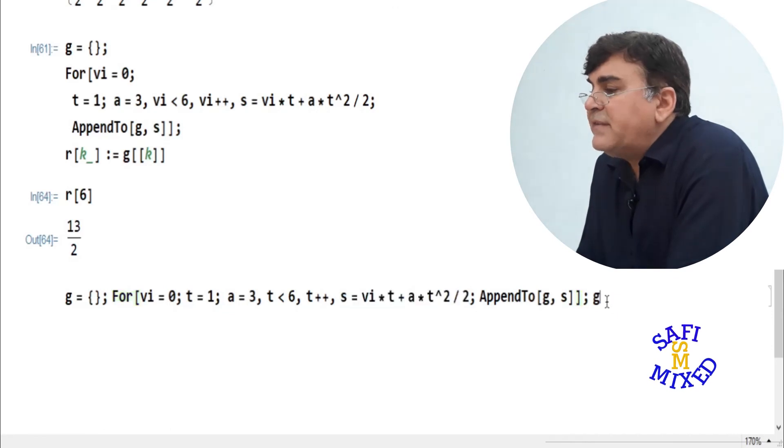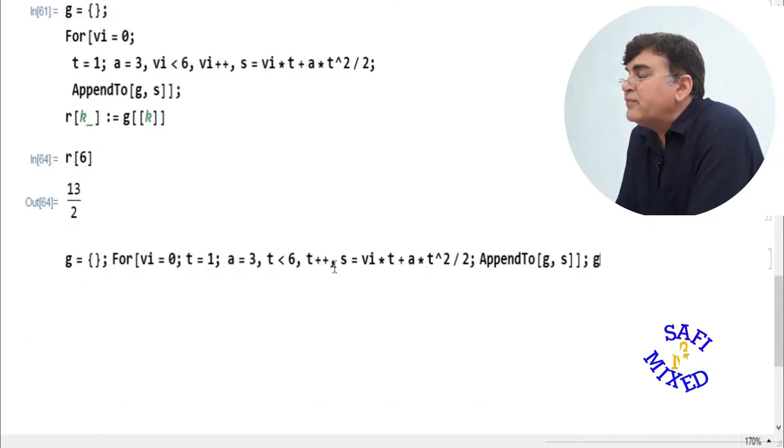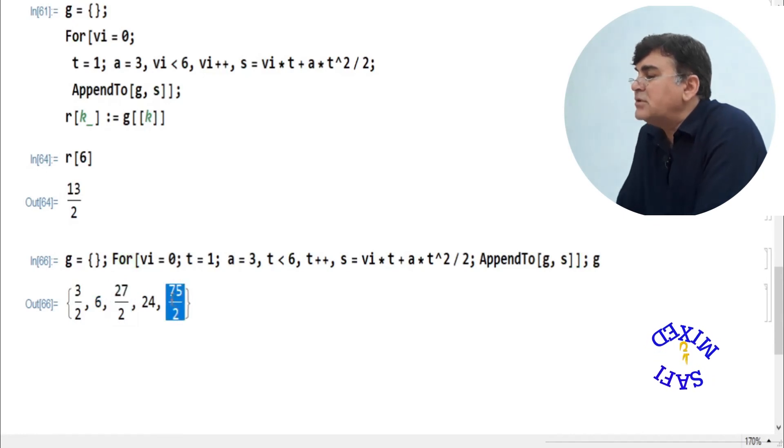For example, if I run this equation, instead of having those values, I would have the values for different values of T. That is, this loop now is not run for iterating the value of V_I; rather, it is iterating the value of T with condition T less than 6 and the value of T increased by an amount of 1. So if I run this loop, I will get the value of list G. This corresponds to T equal to 1, this corresponds to T equal to 2, this one to T equal to 3, and the last one to T equals 5.